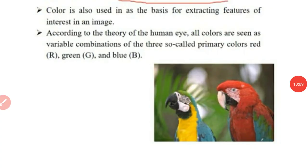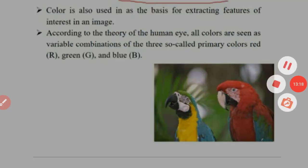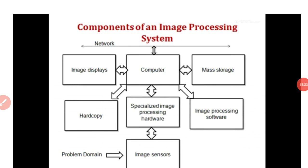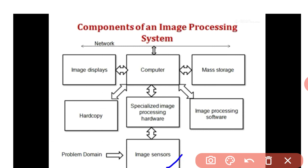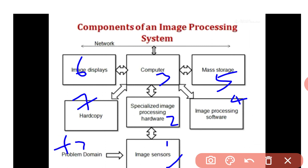These are the basic fundamental steps used in digital image processing. The components of an image processing system are: image sensor, specialized image processing hardware, computer, image processing software, mass storage, image displays, and hard copy output. The analog input image is uploaded into the image sensors, which convert it between time domain and frequency domain — represented as the function f(x, y) — the problem domain sensed by the image sensors.